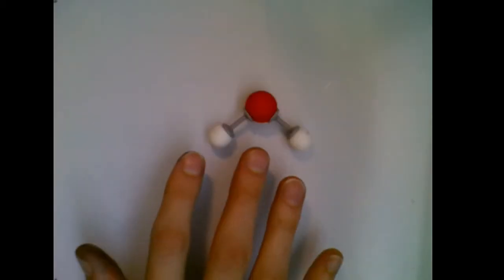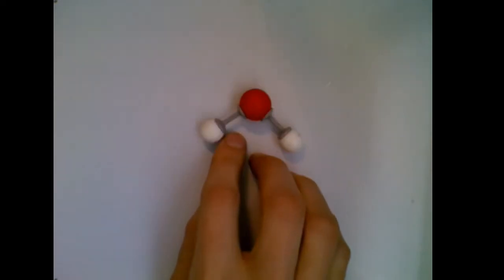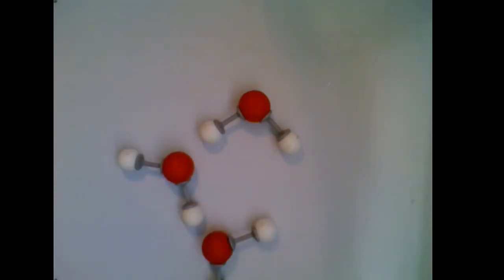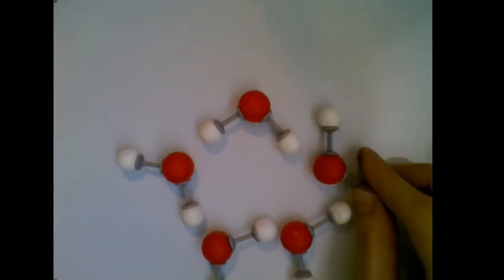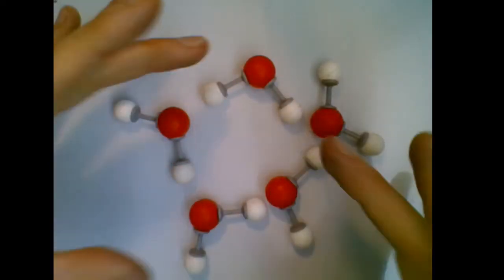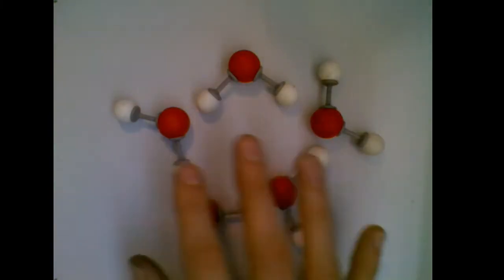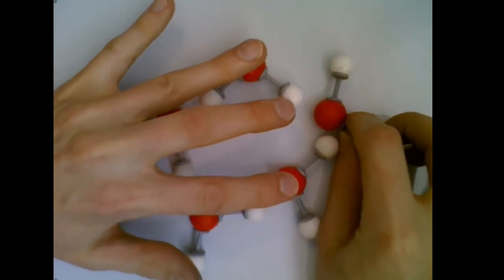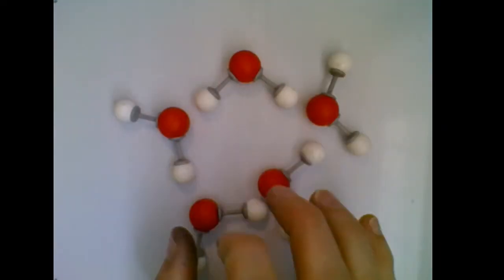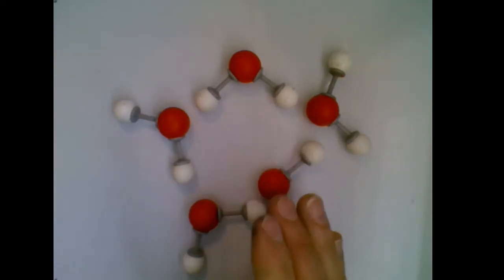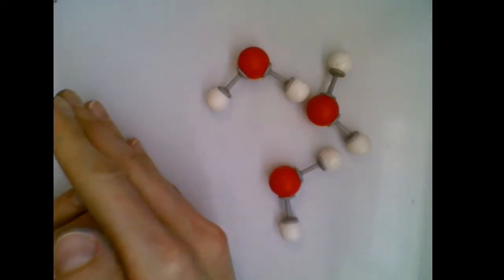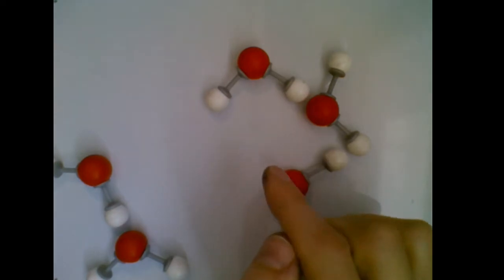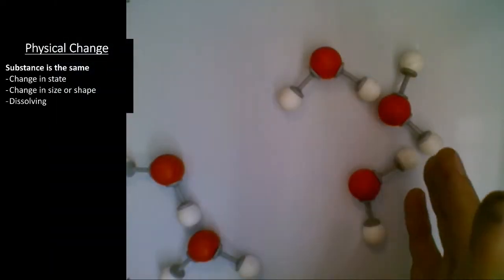Looking back at water — if I change it in some way but don't mess with the actual connections or bonds, that would be a physical change. For example, if I had a whole bunch of water and it arranged itself when cold enough so that it all hooks together, that would be a solid. In a solid, all of these things are connected so that when one moves the others move with it. If you break your solid into two separate pieces, notice that change didn't actually affect the bonds — so that would be a physical change, an example of changing the size or shape.